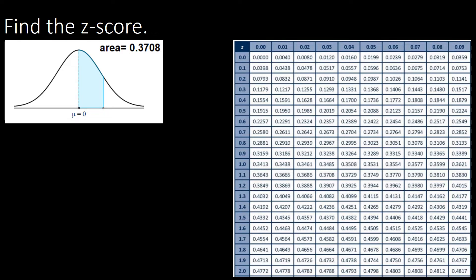Let us try to find the z-score for this given illustration. We have an area of 0.3708, and the area is attached to the center, which is equal to zero. So this is under Case 1.